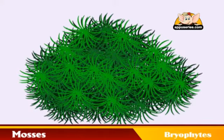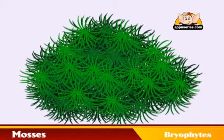Mosses. Mosses are one of the most diverse group of plants, with more than 10,000 species in 700 genera. This makes mosses almost twice as diverse as mammals.